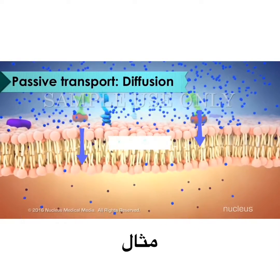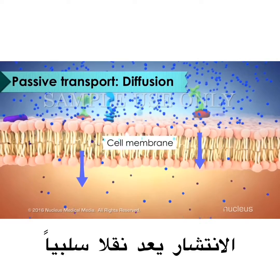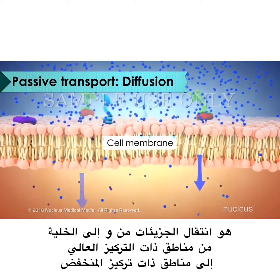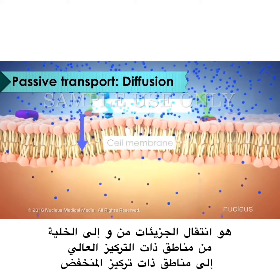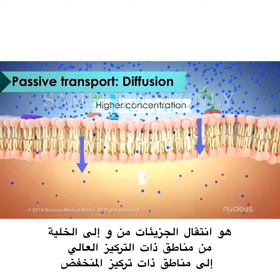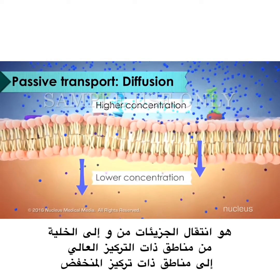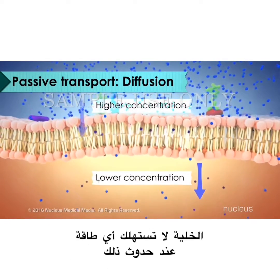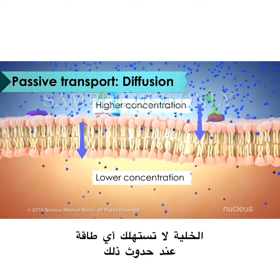For example, diffusion is a passive process in which particles move either into or out of the cell from an area of higher concentration to an area of lower concentration. The cell doesn't use any energy when this happens.